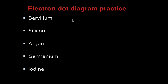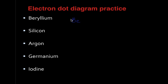For electron dot diagram practice, let's do two examples. For beryllium, we write the symbol Be — remember, if it has two letters, the first is capitalized and the second is always lowercase. Beryllium is in group 2, so it has two valence electrons, and we draw just two dots. For silicon, the symbol is Si, and it's in group 14 — covering up the one, we know it has four valence electrons — so we draw one dot on each side.